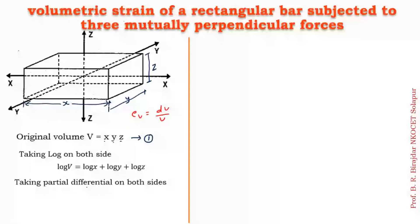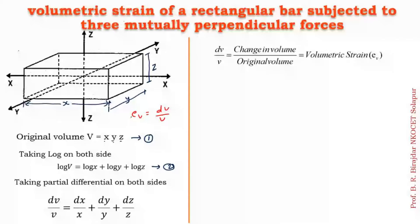Next, we differentiate this equation. When you differentiate, log V gives dV upon V; log x gives dx upon x; log y gives dy upon y; and log z gives dz upon z. So the differentiated equation is dV upon V equals dx upon x plus dy upon y plus dz upon z.